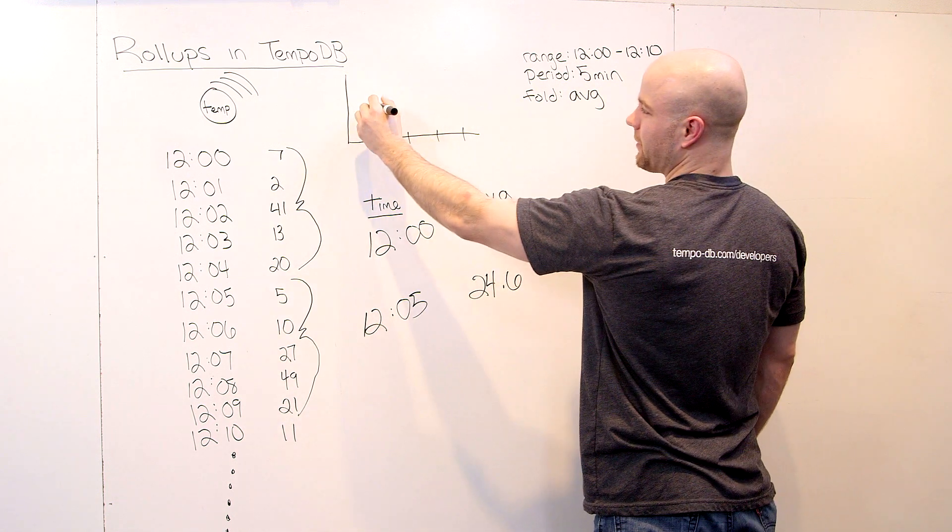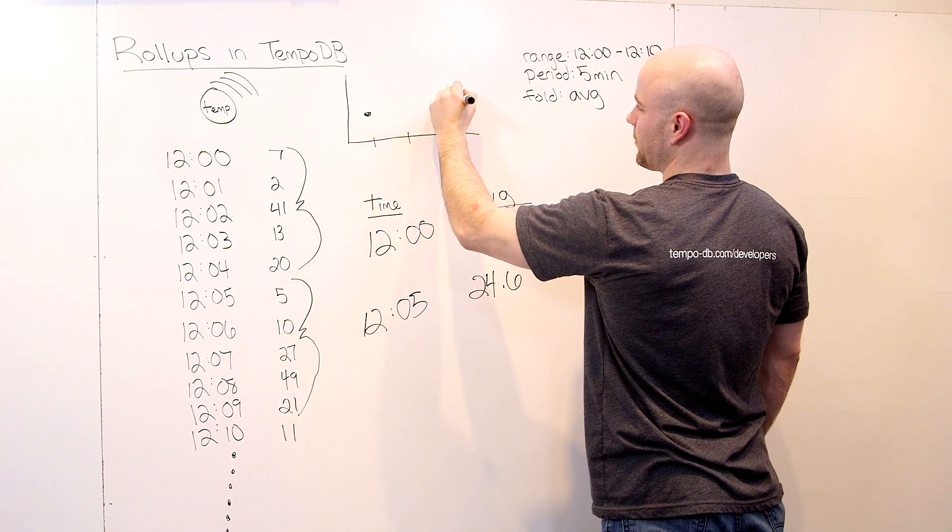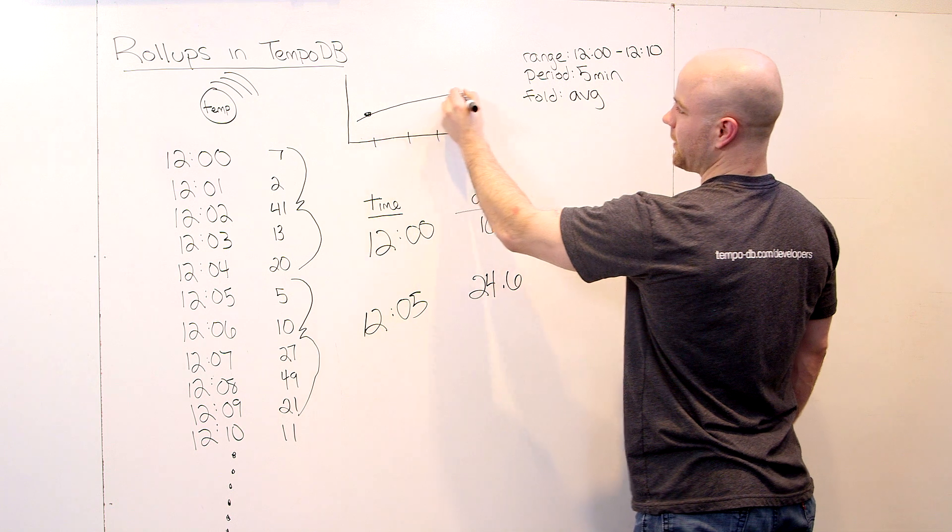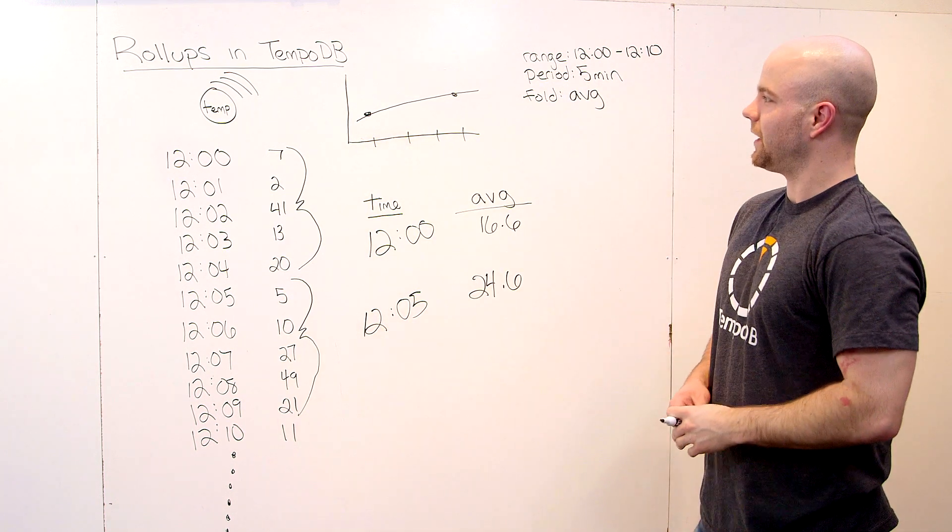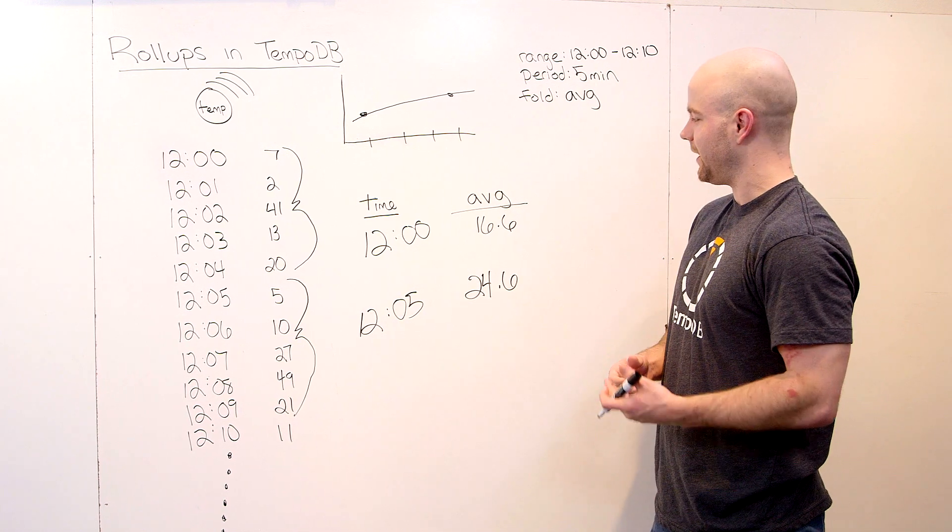And the average of the second five-minute bucket is 24.6. So you could take it to your chart here. You could plot those points and you should see two points or one point for every five minutes of the chart. And that allows you to have this nice regular period as you graph your data.